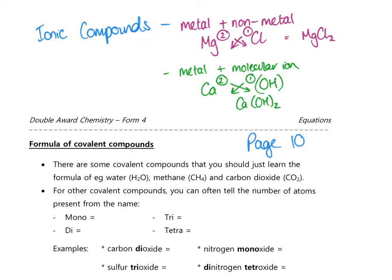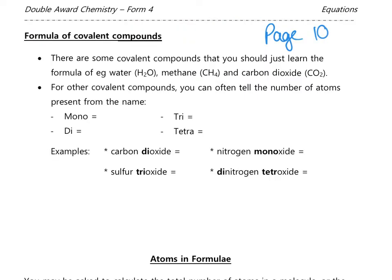With covalent compounds it's a little bit different. Often we get the formula from the compound's name and we don't need to do swap and drop. Covalent compounds, thinking back to the bonding topic, are when we have non-metal atoms bonded to each other, so there won't be any metal atoms involved.